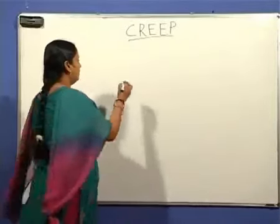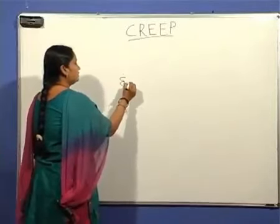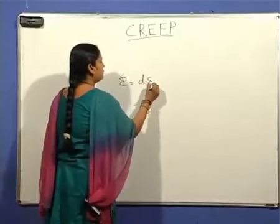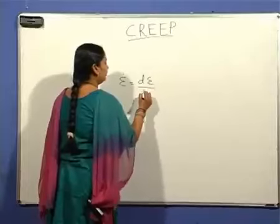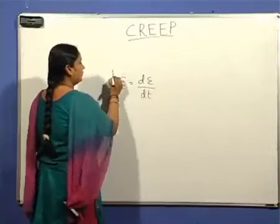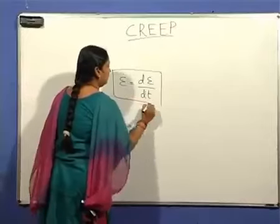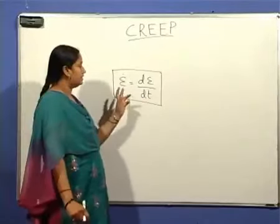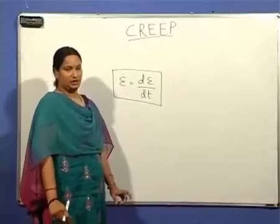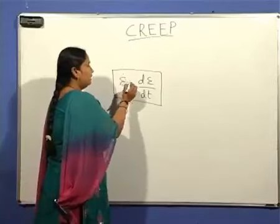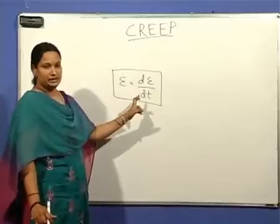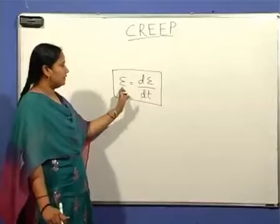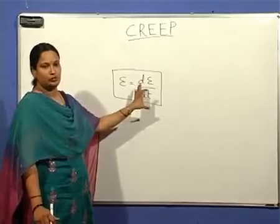Creep rate, which is denoted by epsilon dot, is derived from the slope of the creep curve dε/dt. This is one of the important design parameters that is determined from the creep curve. Creep rate is the slope of the curve.